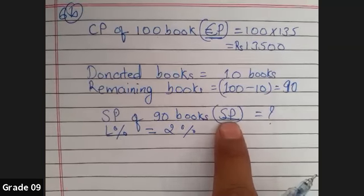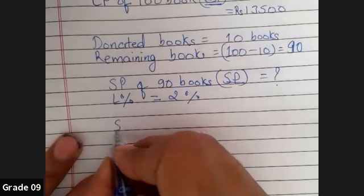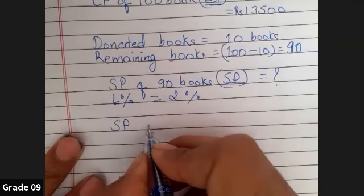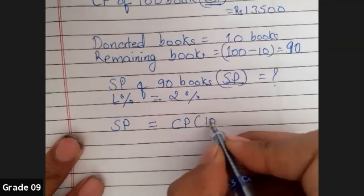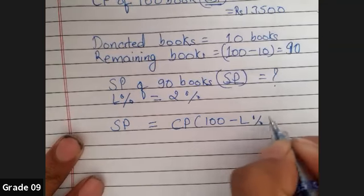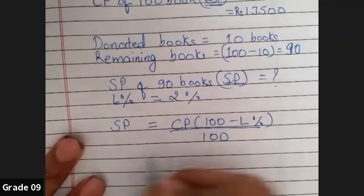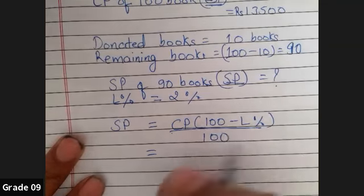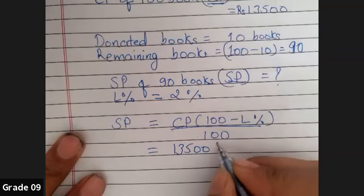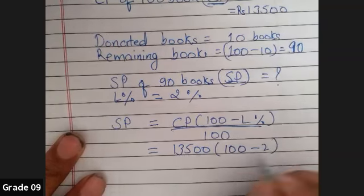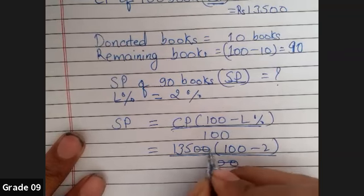Because SP is the target, I'm going to use this formula to get the selling price: SP equals CP bracket 100 minus L percent divided by 100. So CP according to the question is 13,500, and this is 100 minus 2 by 100. So zero zero cancel.